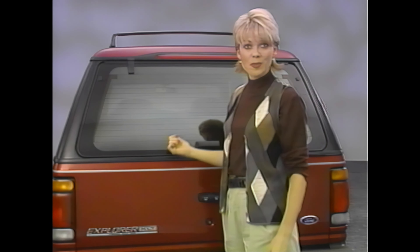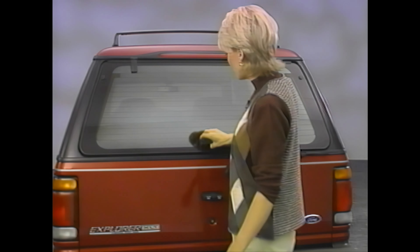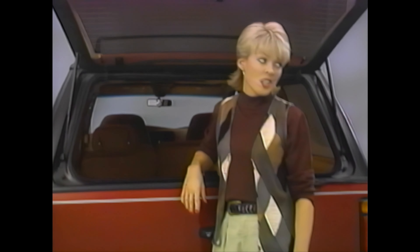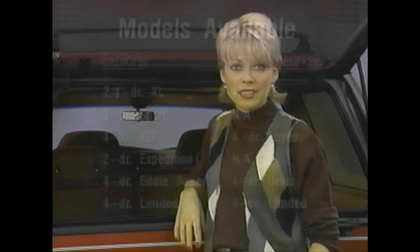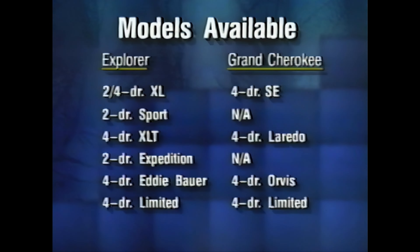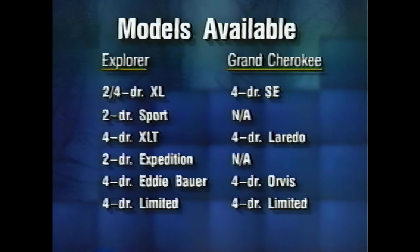Access to the cargo space is important too, and this flip-up backlight is standard on all Explorers — a feature not available on the Grand Cherokee Laredo; Jeep offers it only on the Limited. Explorer also offers two- and four-door body styles in six distinct series, complete with a long list of standard features and value-priced option packages. Cherokee limits choices to one four-door body style and four trim levels. To get a two-door model, Jeep buyers have to drop down to the lower-level Cherokee models. And nothing Jeep offers matches the new Explorer Expedition.